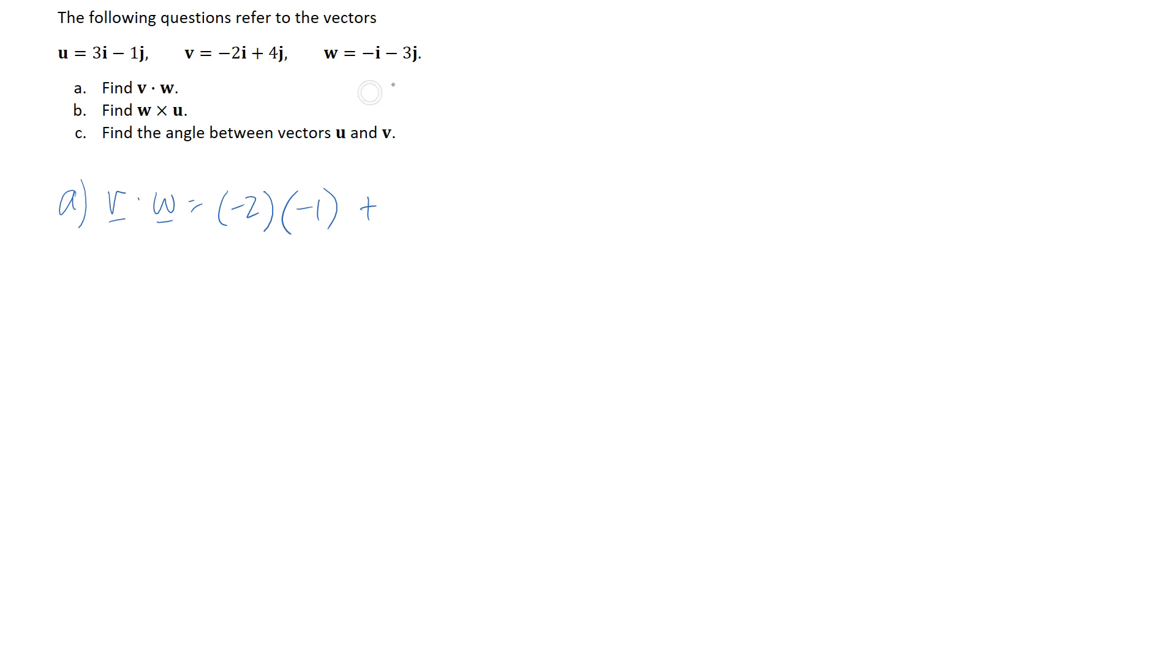We're then going to add on the corresponding multiplication of the y components so that's going to be four and negative three and we don't have any z components so I'm just going to leave that off it would just be zero times zero.